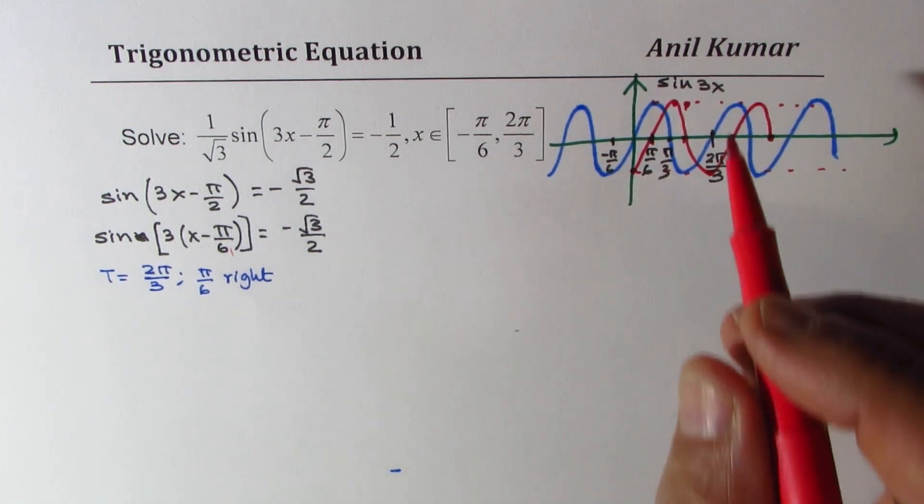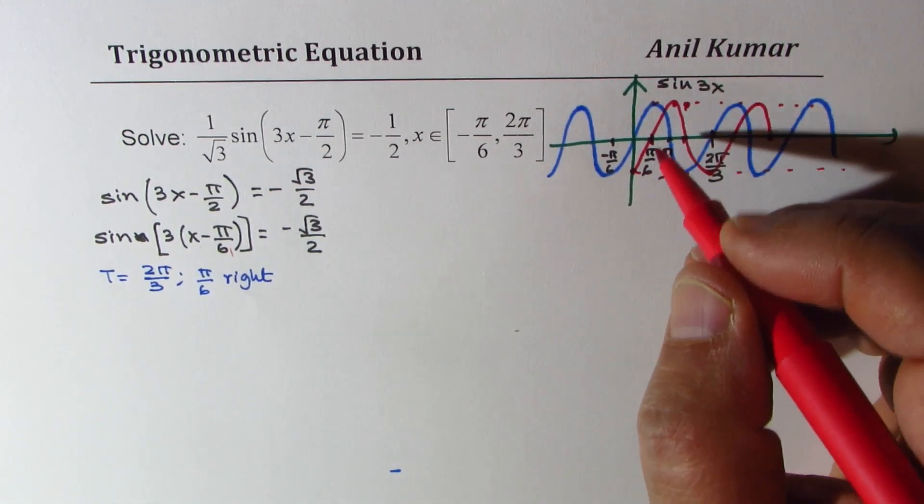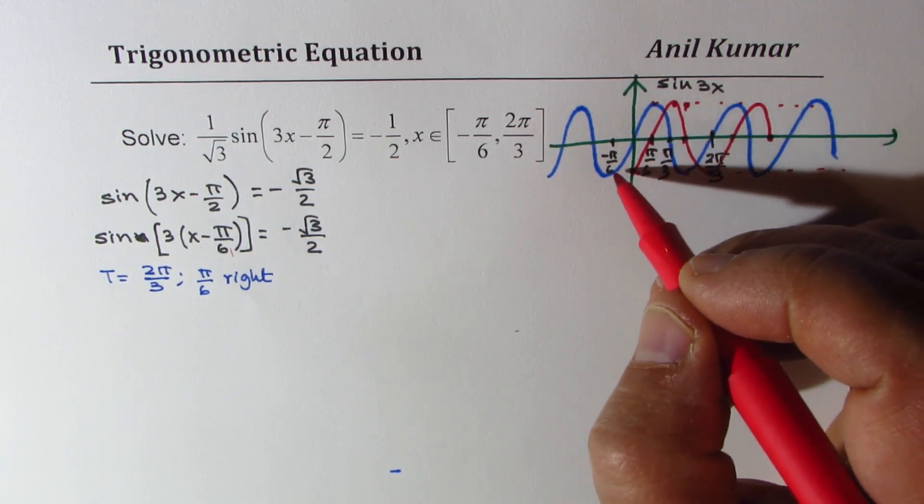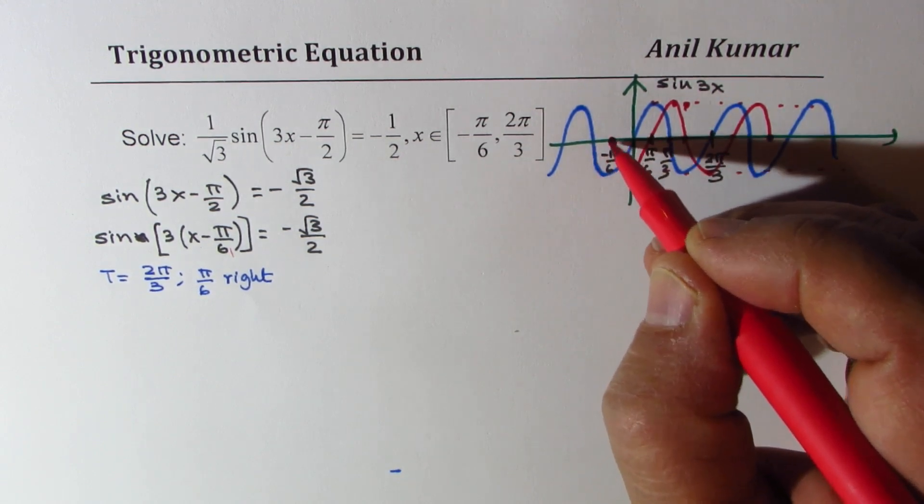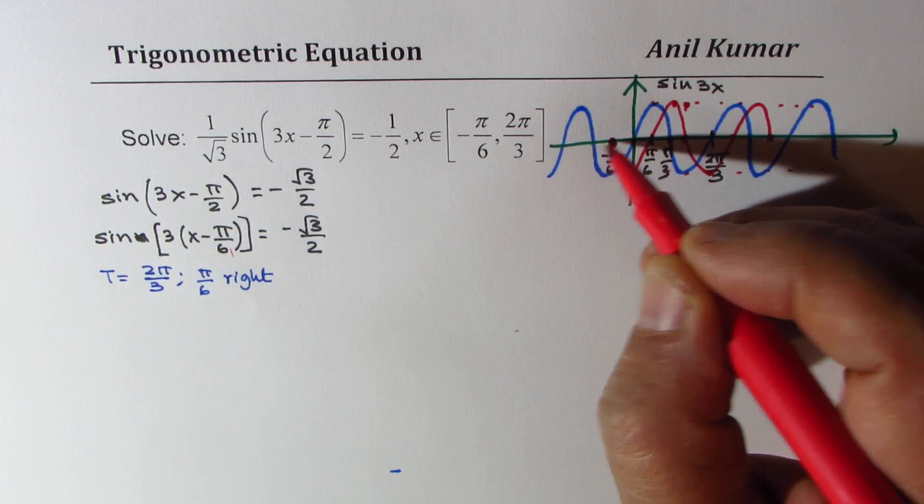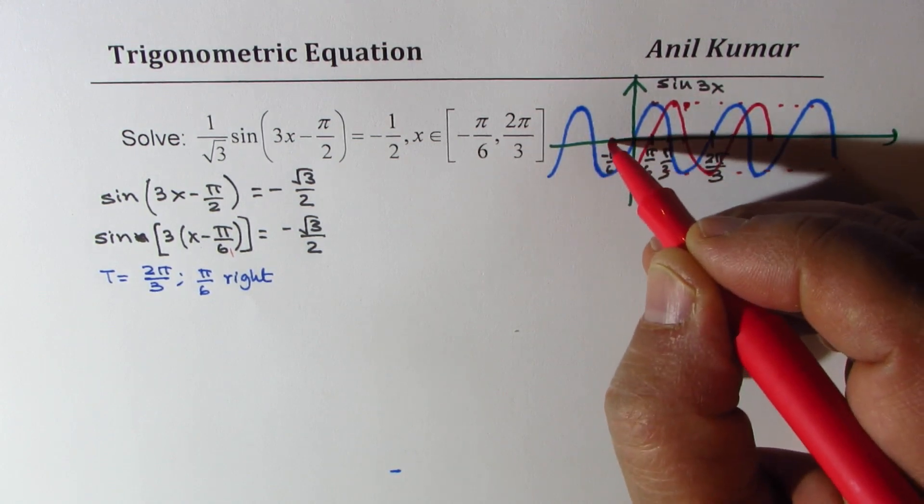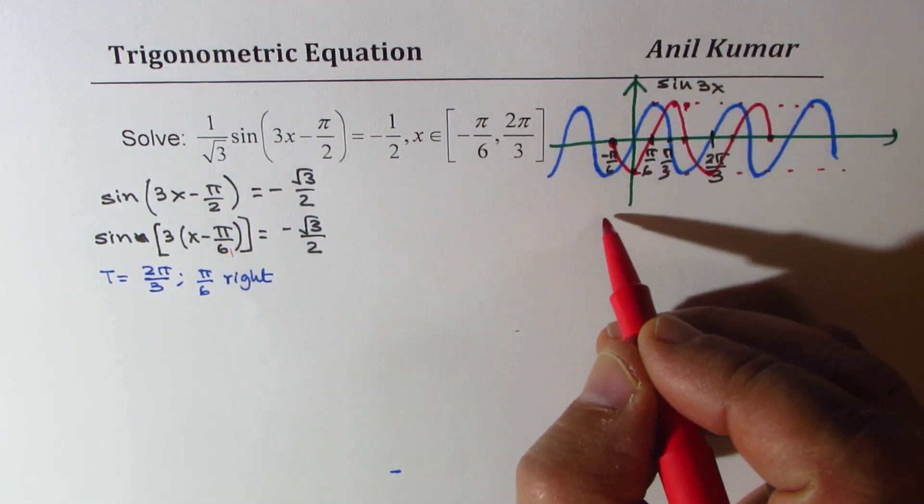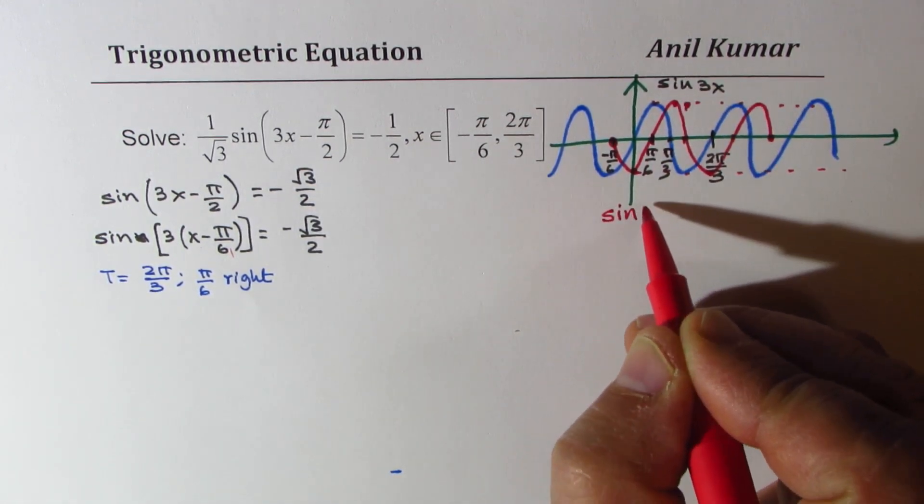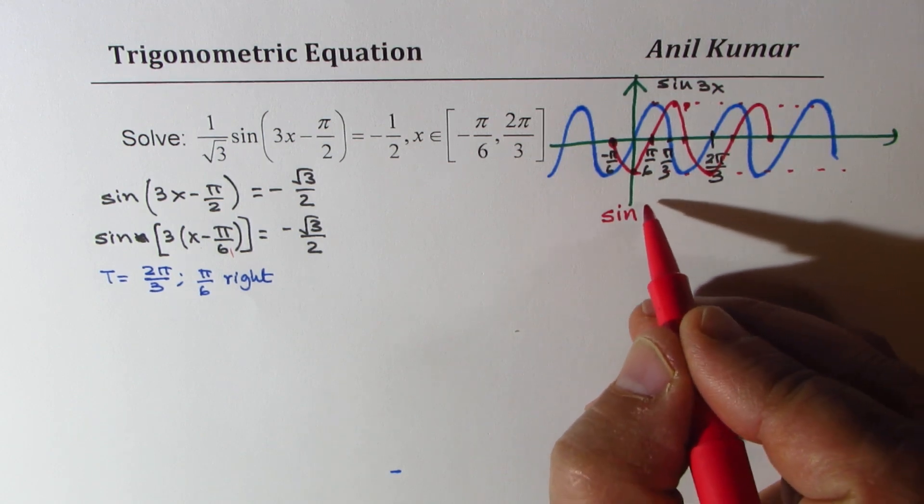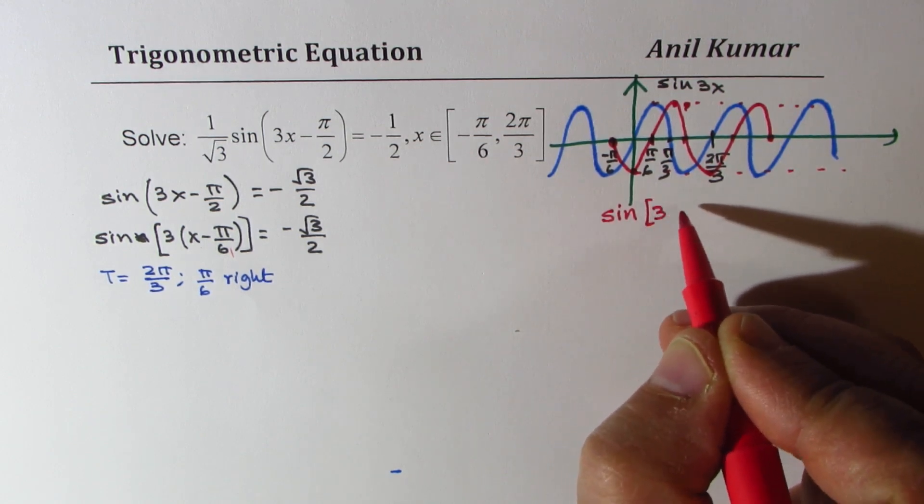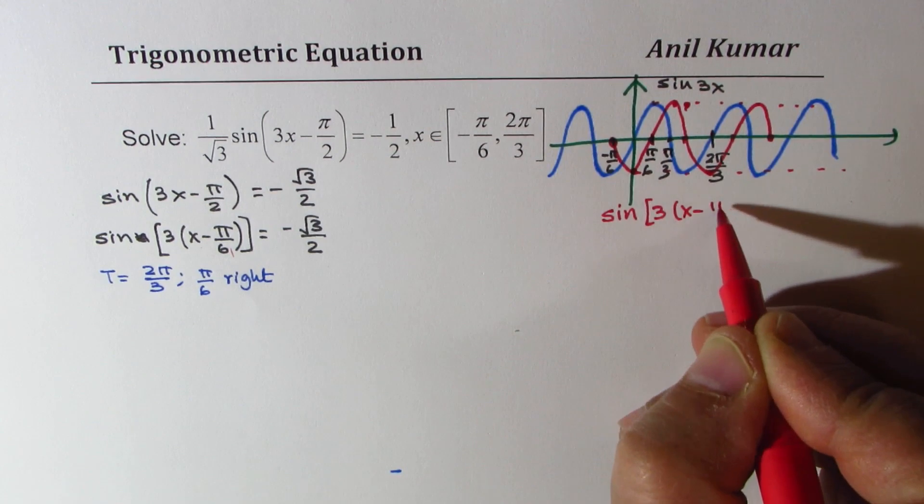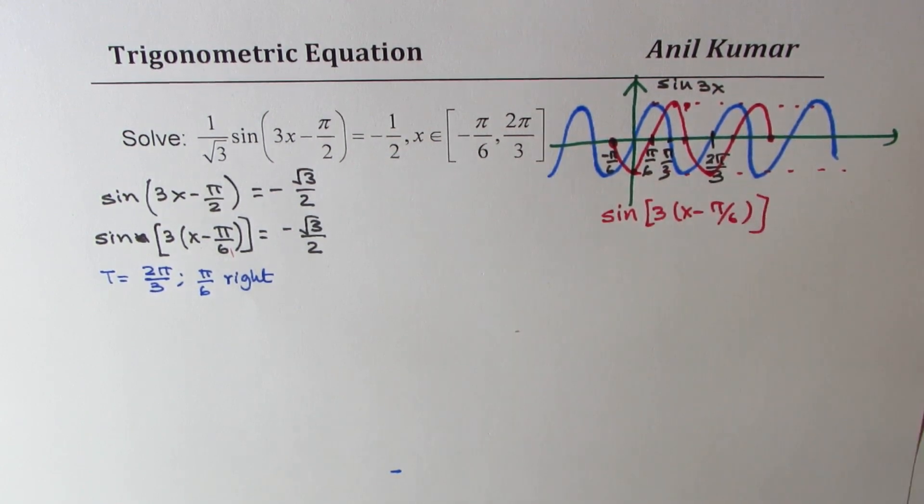So what we have here is a function which has been shifted pi by 6 to the right. The function in red is basically sine of 3x minus pi by 6. That is the function.